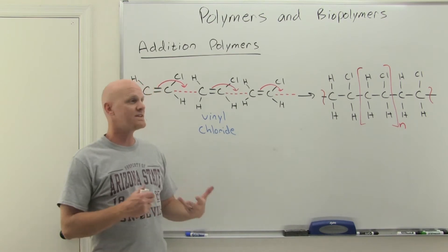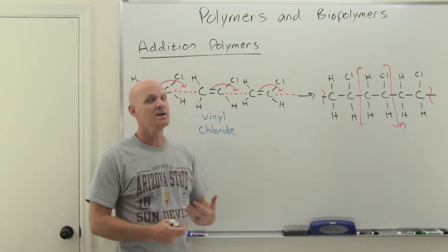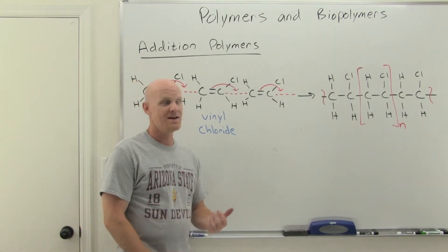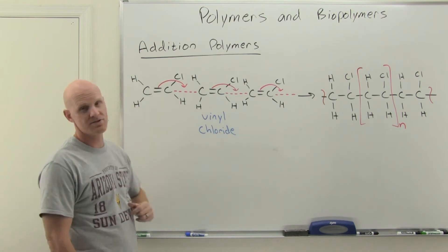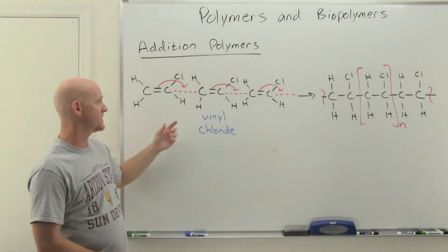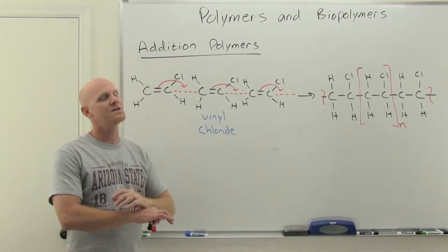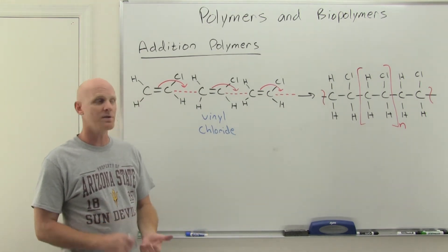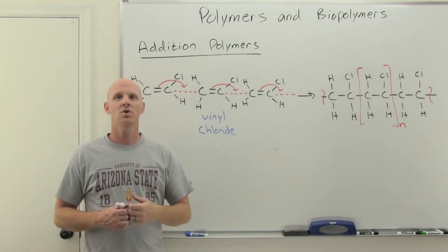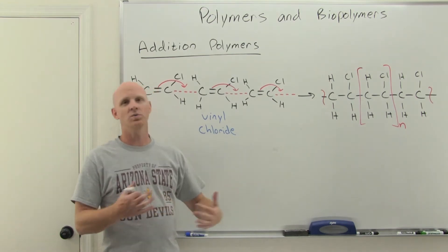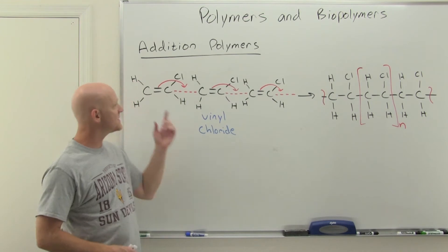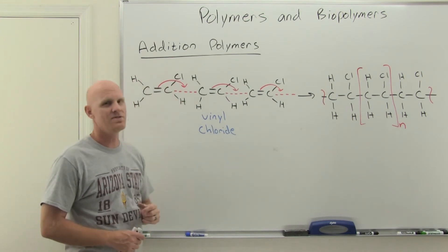What's going to really change from addition polymer to addition polymer is: one, do you have a single monomer or a copolymer with multiple monomers? And then, what are the four things attached to the alkene. Sometimes you can put more halogens in, or attach a benzene ring. There's a whole variety of different polymers, and based on what you attach in these four positions, you can make your polymer stronger, weaker, more elastic or less elastic — you can change the properties by just changing what groups are attached.